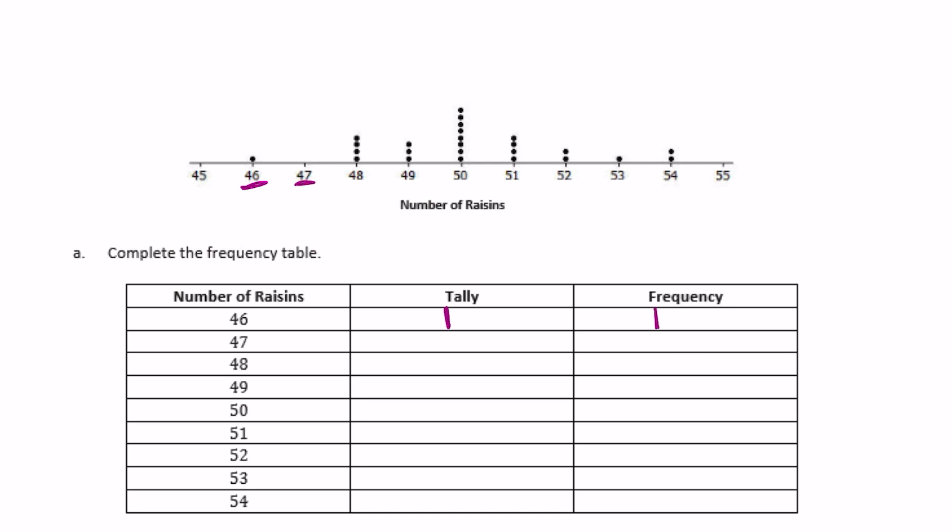So for 47, there were 0. For 48, there were 4. For 49, there were 3. For 50, let's see, 1, 2, 3, 4, 5, 6, 7, 8. For 51, we have 4. 52 has 2. 53 has 1. 54 has 2.